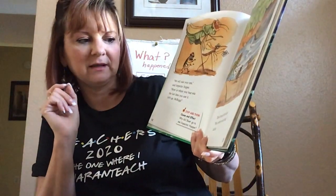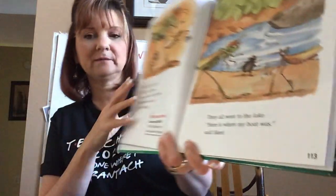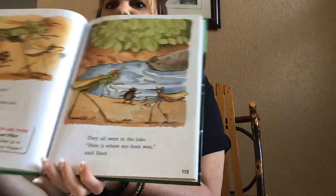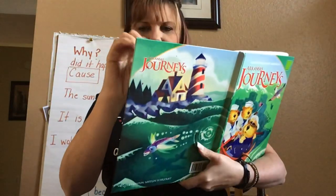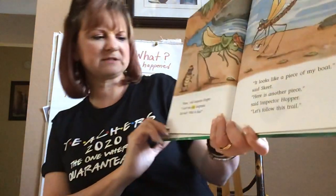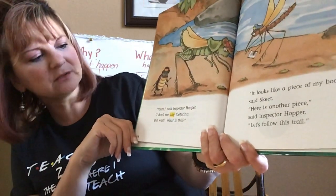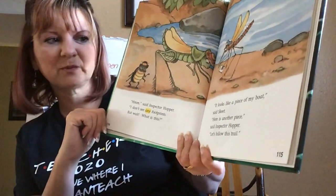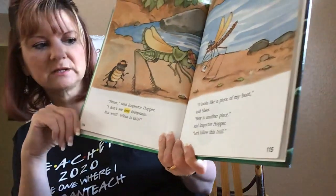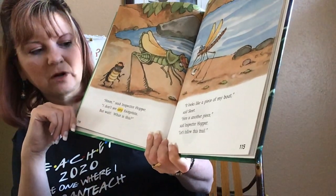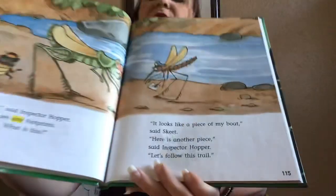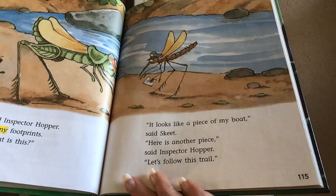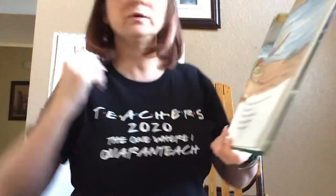They all went to the lake. 'Here is where my boat was,' said Skeet. It was on the river there, on the lake. 'I don't see any footprints, but wait — what is this?' 'It looks like pieces of my boat,' said Skeet. 'Here's another piece,' said Inspector Hopper. 'Let's follow the trail.' So if you look carefully, you can see the little pieces of the leaf. Those are called clues — you have to follow the clues.